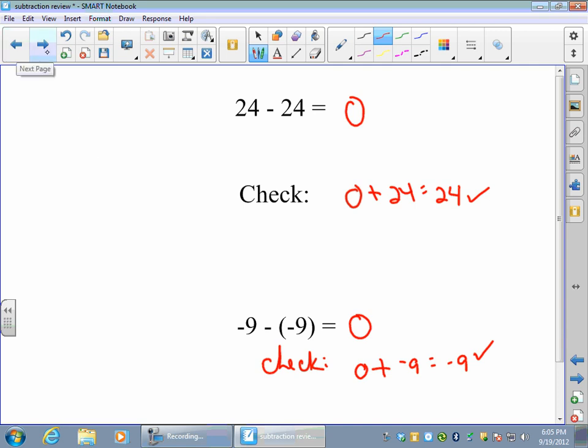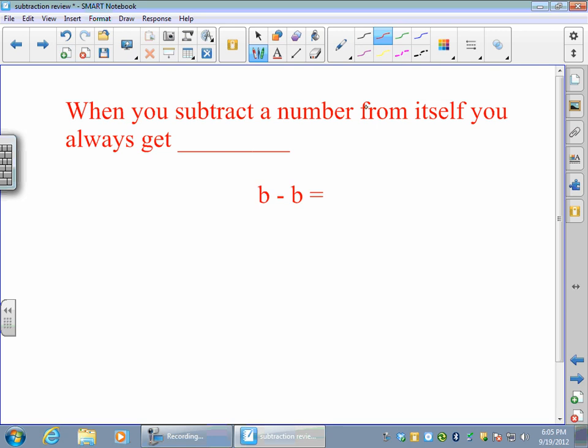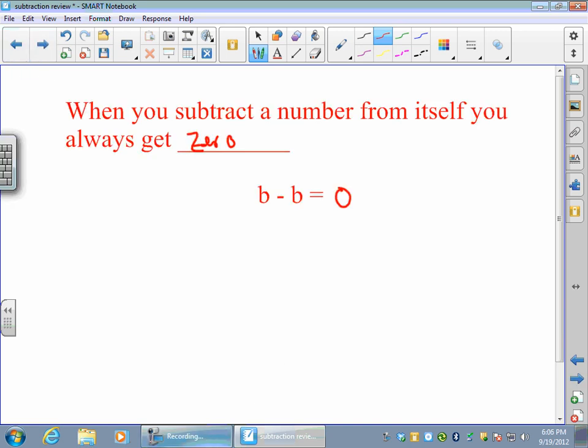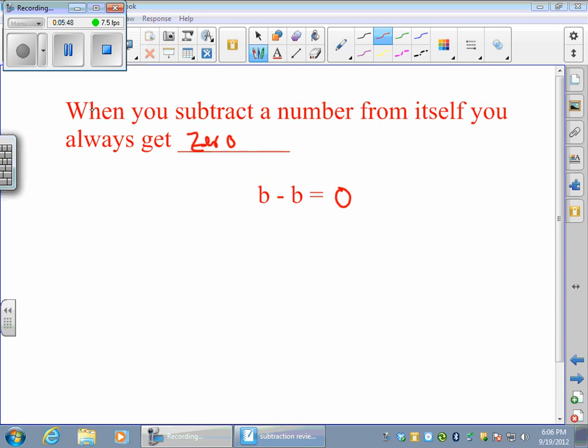And so this rule is just when you subtract a number from itself, you always get zero. Whether it's positive, negative, fraction, decimal, doesn't matter. Any number minus itself will give you zero. So in algebra, we would write something like b minus b equals zero. And b could be anything. And that's it. That's all we have today, those two rules. If you subtract zero, it doesn't change. It's the number you started with. And if you subtract a number from itself, you're going to get zero.